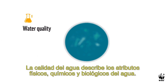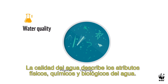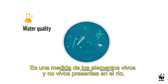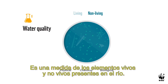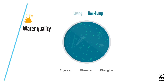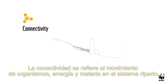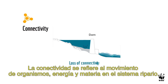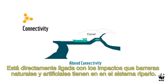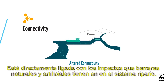Water quality describes the physical, chemical and biological makeup of the water. It is a measure of the living and non-living elements present in a water course. Connectivity refers to the movement of organisms, energy and matter through a river system. It is intimately linked with impacts that natural and man-made barriers have on a river system.